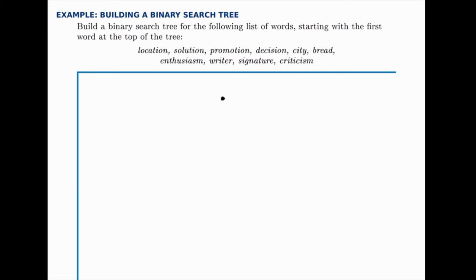We'll start at the top of the tree with the word 'location.' To insert a word, we'll start at the top of the tree and move to the right or left, depending on whether that word comes before or after 'location' alphabetically. As soon as we find an empty spot, we'll place it there. For instance, 'solution' comes after 'location,' so we'll move to the right and insert a new node for 'solution.'